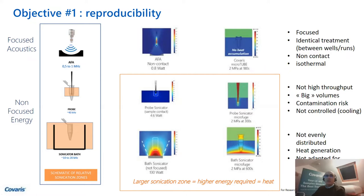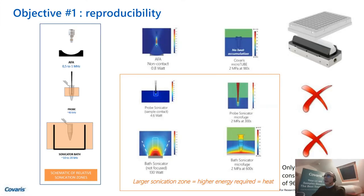Unlike other technologies based on sonication, like probe sonication or water-based sonication, we really work in a concentrated zone of one to three millimeters. As a consequence, you avoid creating heat variability between samples. Also, to our knowledge, we are the only technology able to process at the same time one to 384 samples, and as such, the only technology able to guarantee parallel and consistent treatment between samples.